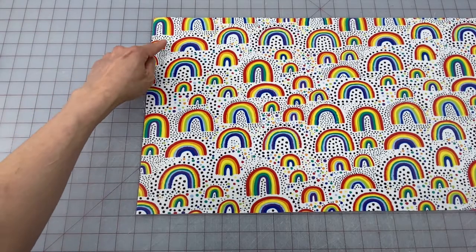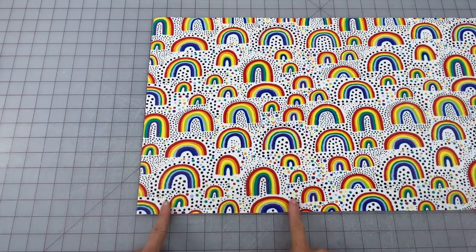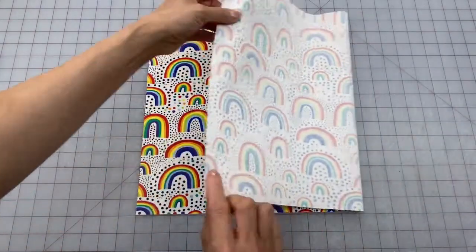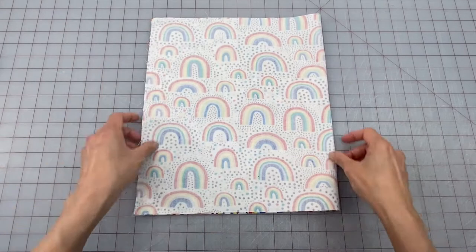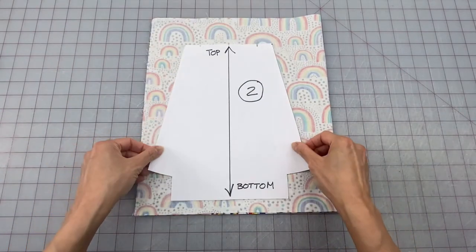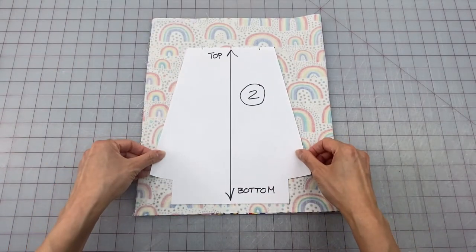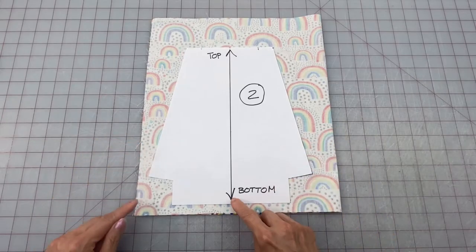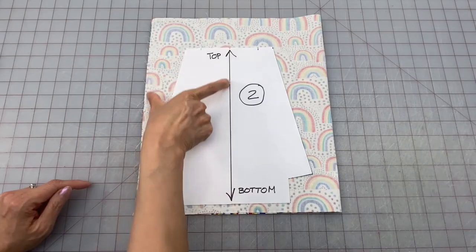Now for your fabric, if it has a pattern, make sure the bottom of the pattern is facing you and then put right sides together. Place your pattern down on the fabric making sure that the grain line is along the lengthwise grain or parallel to the selvage edge.